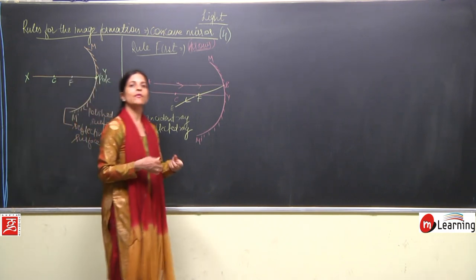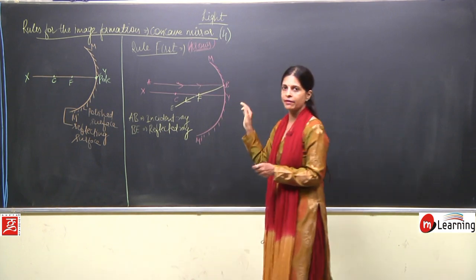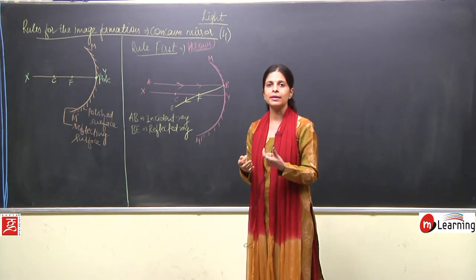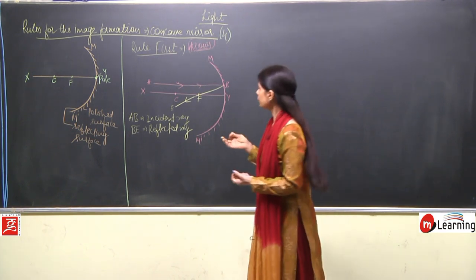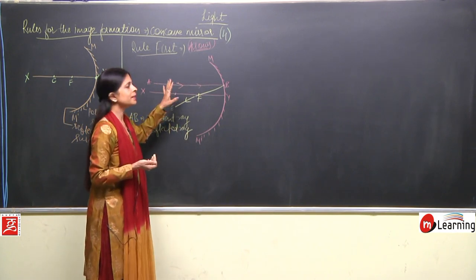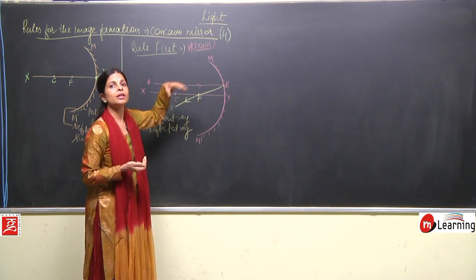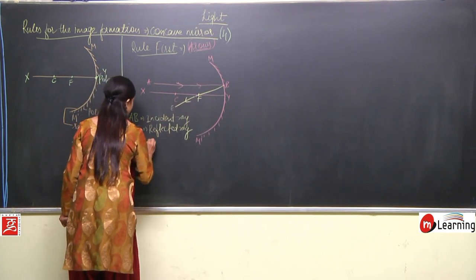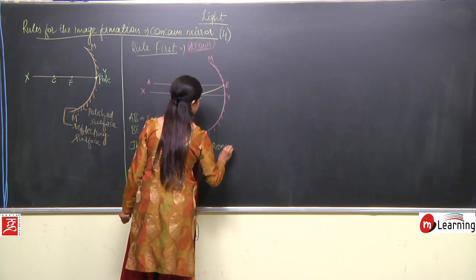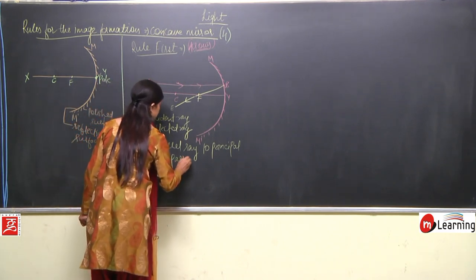Just to clarify, for ray diagrams we always take only two rays to keep diagrams simple and easy to understand. It is not that only two rays travel from the object — we simply use two rays for clarity. The first rule says: a ray parallel to the principal axis will pass through focus after reflection.